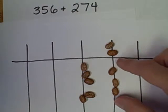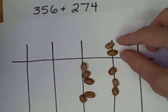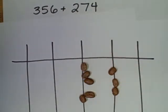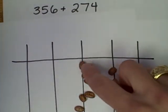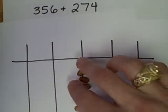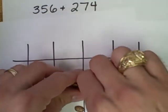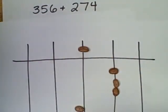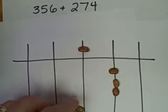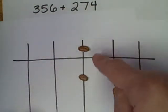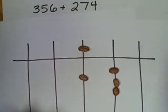Three tens here. Two fifties, I exchange the two fifties for a hundred. And then one, two, three, four, five hundreds. I can exchange for one five hundred. So my sum here is 630.